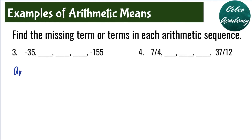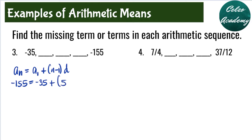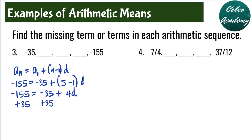For question number 3, we use the formula a sub n equals a sub 1 plus n minus 1 times d. Our last term a sub 5 is negative 155, and a sub 1 is negative 35. With n equal to 5, we have negative 155 equals negative 35 plus 4d. Adding 35 to both sides gives negative 120 equals 4d. Dividing both sides by 4, d equals negative 30.